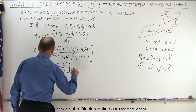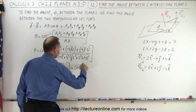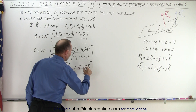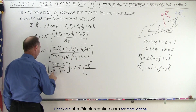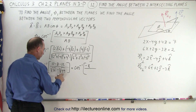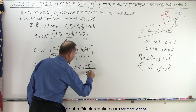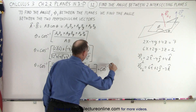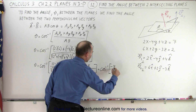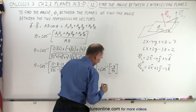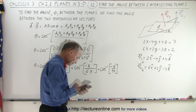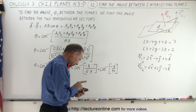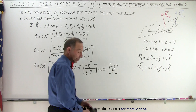This is equal to the inverse cosine of: 12 minus 12 is 0, so we get negative 8, and we divide that by the square root of 36, which is 6, times the square root of 49, which is 7 — so 6 times 7 equals 42. That gives us the inverse cosine of negative 8 over 42, which equals an angle of 101 degrees.